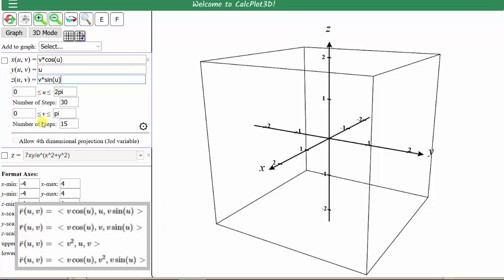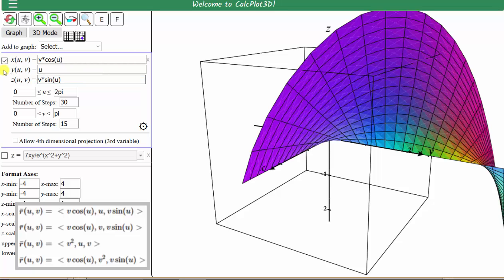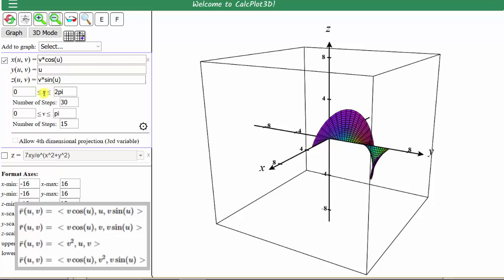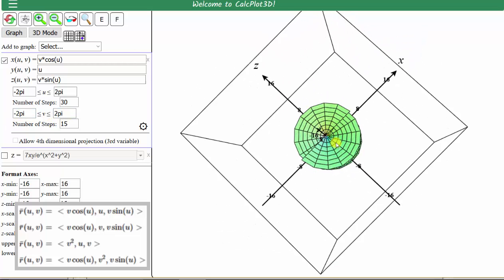Notice here we can change the interval for u and v. To graph the surface, we click on the box to the left of the parametric equations. Let's begin by zooming out. And now let's also adjust the intervals for u and v. Let's change u from negative two pi to positive two pi, and let's do the same for v. And now we have a nice graph of the surface.